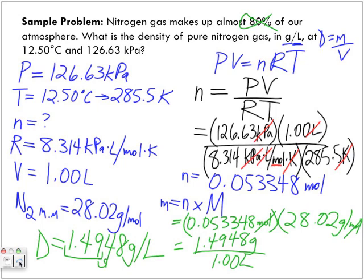So the density of nitrogen gas at that pressure and temperature is 1.495 grams per liter.